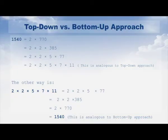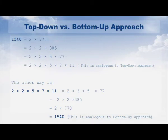To sum up, let us conclude this session with a lucid example. Take the natural number 1540. This number can be factorized as follows: 1540 equals 2 × 770; then 770 is factorized to give 2 × 2 × 385; 385 is factorized to give 2 × 2 × 5 × 77; 77 is factorized as 7 × 11. So the final prime factors are 2 × 2 × 5 × 7 × 11. This is analogous to the top-down approach, wherein we break the complex number into sub-elements.